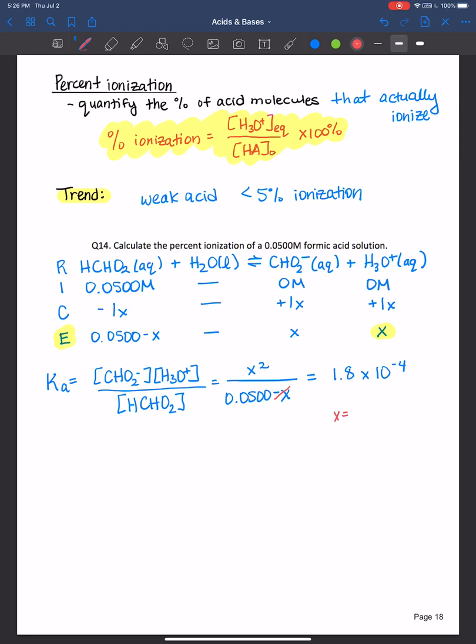So x if you solved for it using the shortcut would be 0.00300. Remember to check to see if it's less than 5% of the initial concentration.